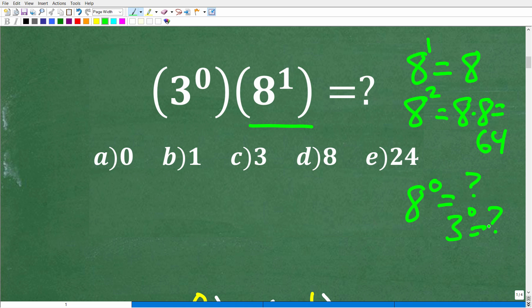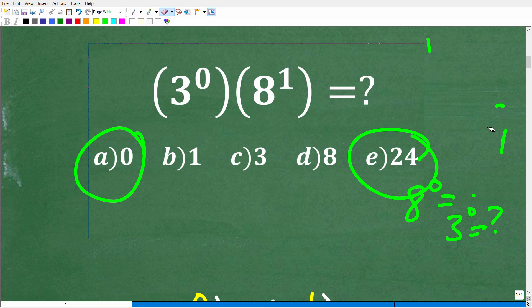So what is 8 to the 0 or 3 to the 0 equal to? Well, this is quite confusing. It could be logical where we might be saying, 3 to the 0 power, maybe that's just 0. If this is 0, then 0 times 8 to the 1st, which would be 8, could be 0. So A could be a logical choice. Some people might say, oh, I think something has to do where you have 0 power, it's equal to 1. So maybe this is 3 to the 1st, so 3 times 8 is maybe 24.